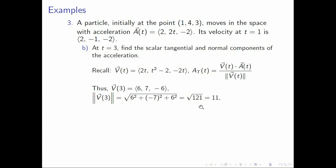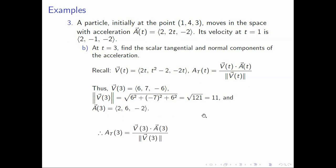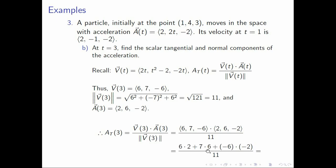Next, a(3): the first component is 2, the second is 6, and the third is -2. So the scalar tangential component at t=3 is the dot product of v(3) and a(3) divided by 11. The dot product is 6×2 + 7×6 + (-6)×(-2) = 12 + 42 + 12 = 66. Divided by 11, we get 6. The scalar tangential component at t=3 equals 6.